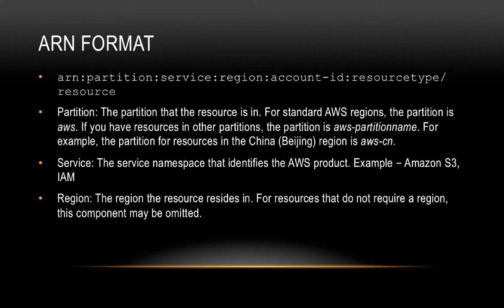Let's now talk about the ARN format. The ARN format looks like this: arn:partition:service:region:account-ID:resource-type/resource. Starting with partition — it indicates the partition that the resource is in. For standard AWS regions, the partition is "aws". If you have resources in other partitions, the partition is "aws-partition-name". For example, the partition for resources in the China region is "aws-cn".